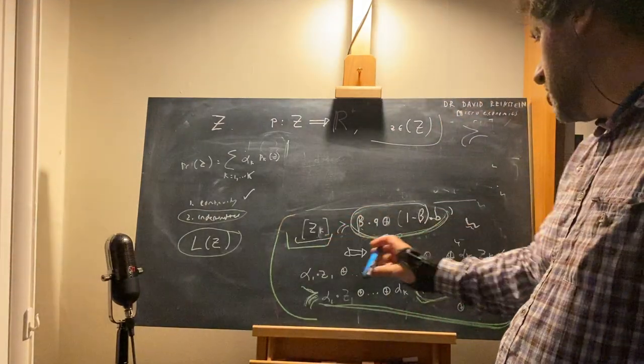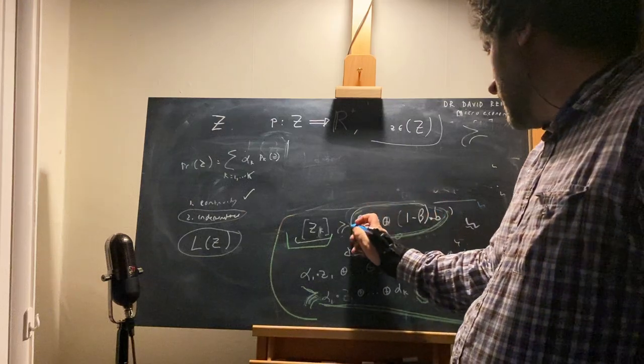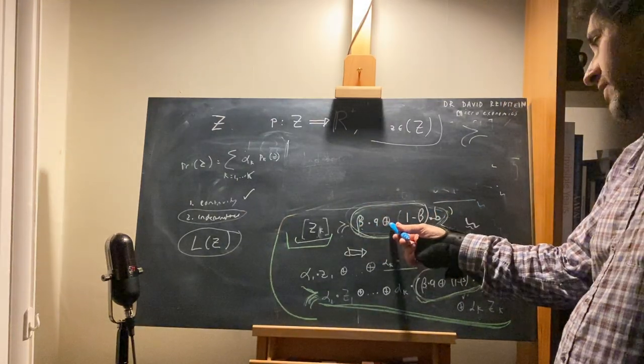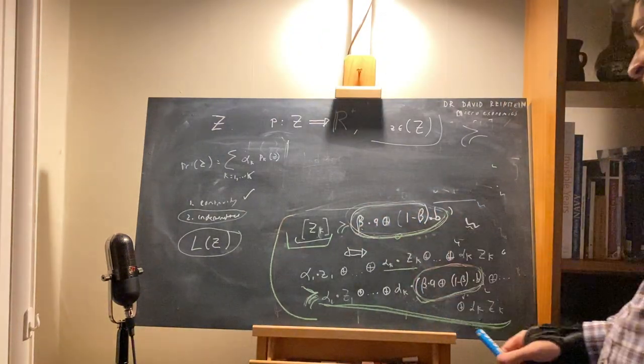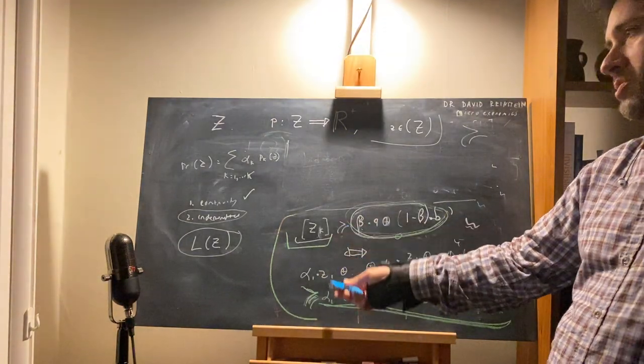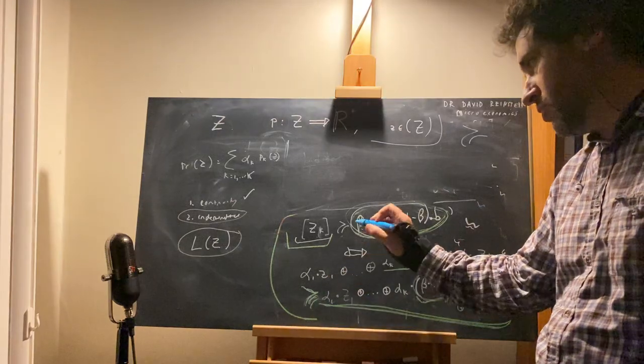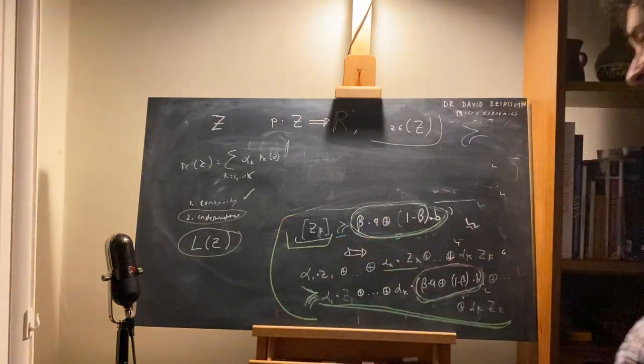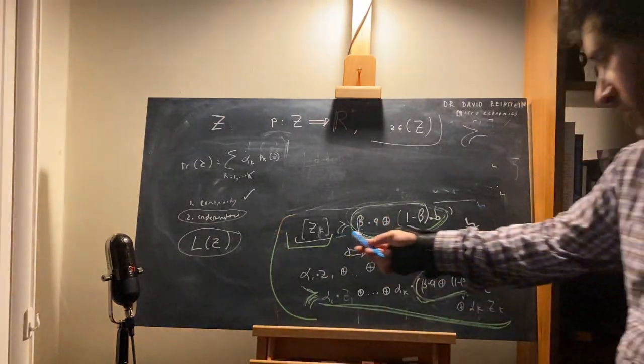zk as a certainty is preferred to this lottery here: beta probability of a and one minus beta probability of b. So I go from here, this being weakly preferred to this—could also say strictly preferred, that would also apply—but we're tending to define things in terms of weakly preferred. So this is preferred